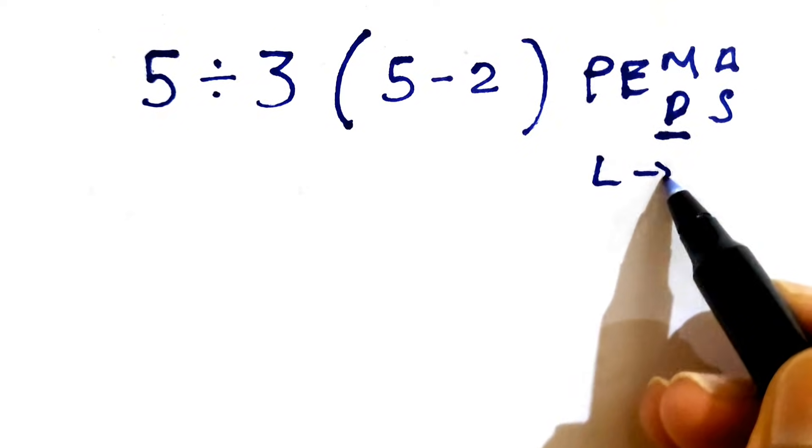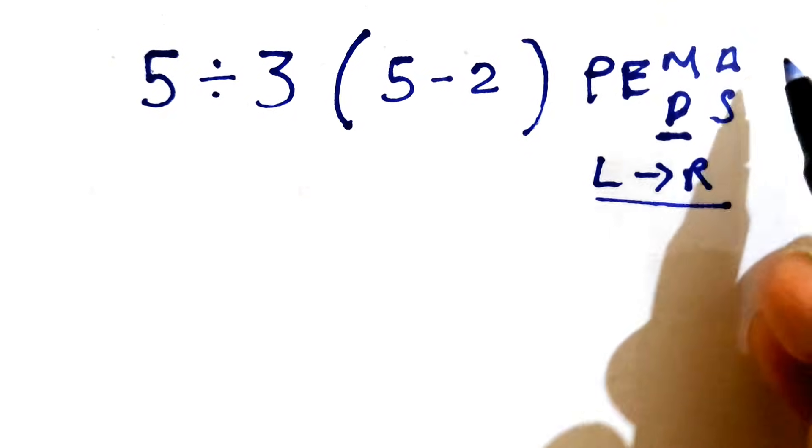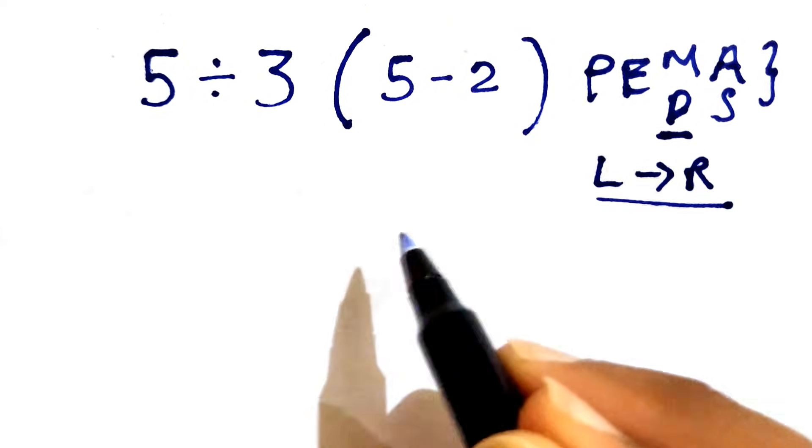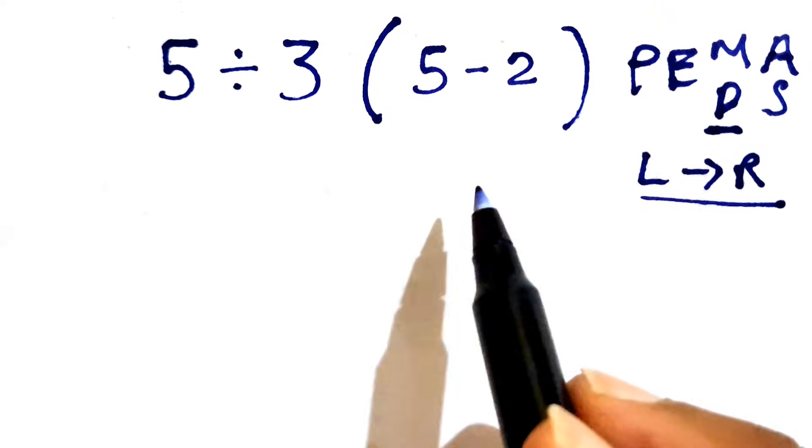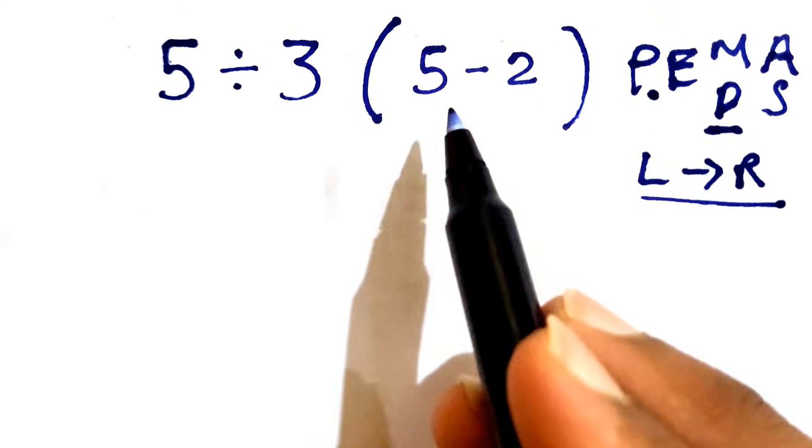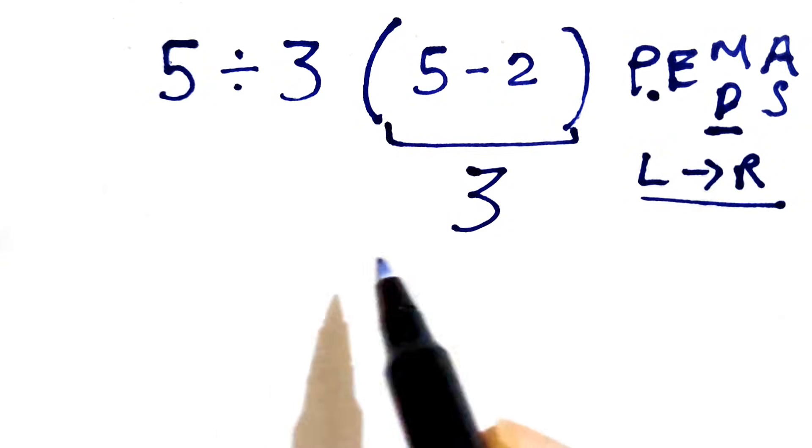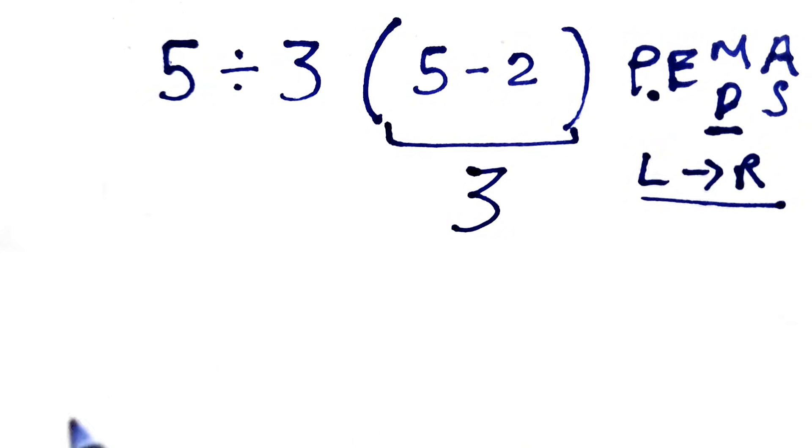Whichever comes first, we need to solve it, and the same applies for addition and subtraction. So let's solve this with the help of order of operations. First, we'll solve the parenthesis: 5 minus 2 gives us 3. Now we write the expression once again to make it more clear.